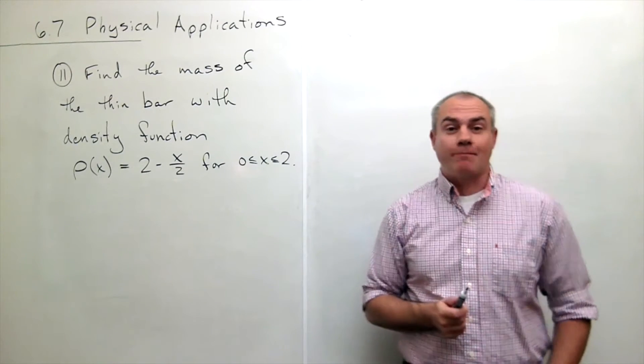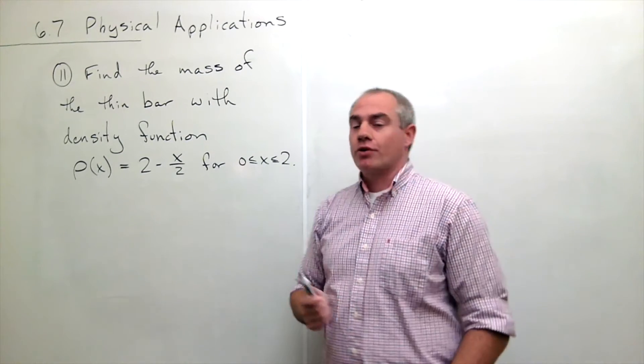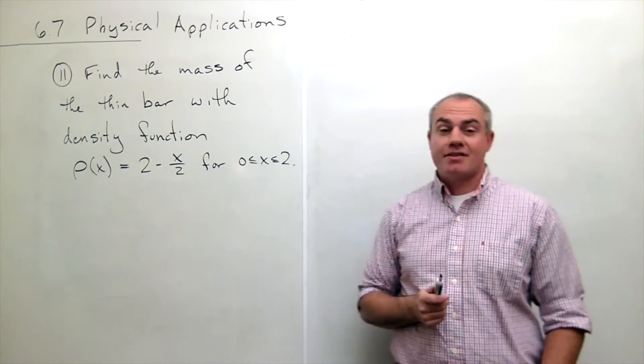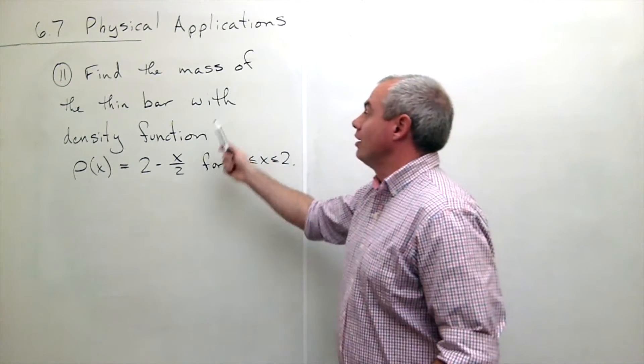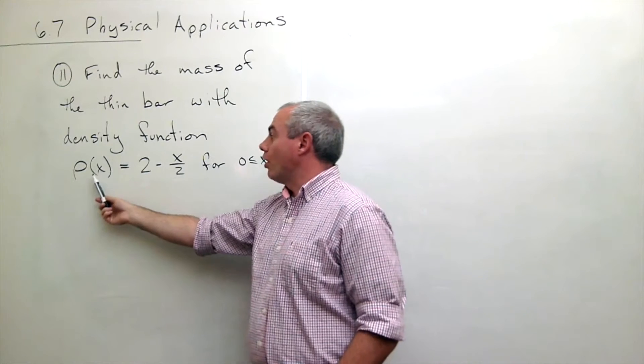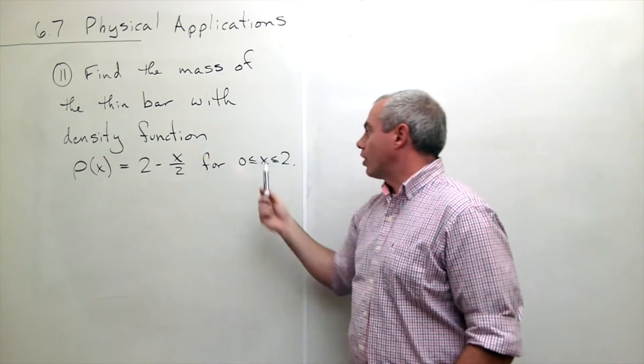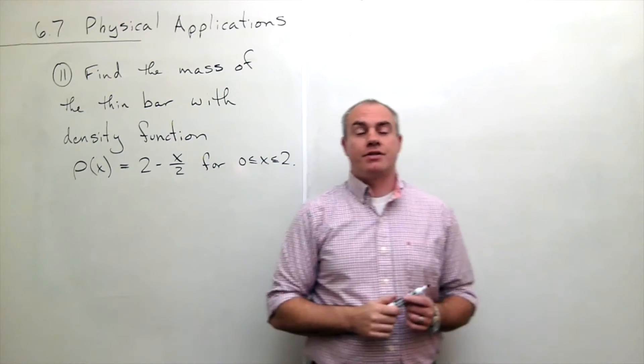which is on physical applications. We're going to start with number 11, which asks us to find the mass of the thin bar with density function ρ(x) equals 2 minus x over 2 for x in between 0 and 2.